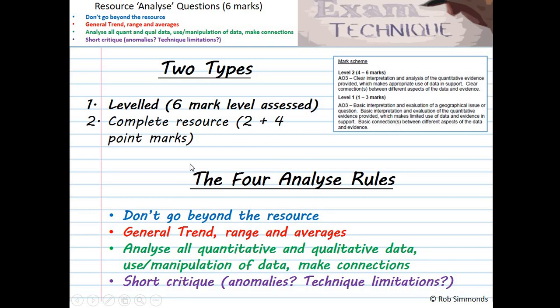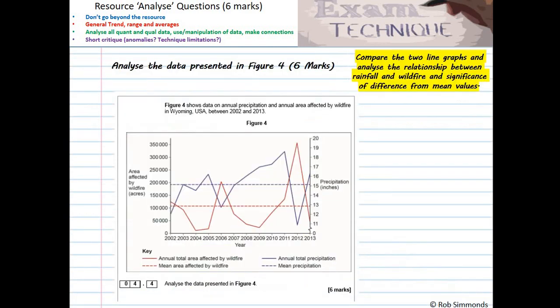So, the four rules for this type of question that will help you with your answer. Number one, don't go beyond the resource, and I'll show you some examiner's feedback to really confirm that to you. And then on to describing the general trend, if possible, including a range and use of averages. Make sure you analyze all quantitative and qualitative data. That might be comparisons of different graphs or pictures to graphs, something like that. If possible, manipulating data and certainly making connections between the two. And then if possible, some sort of critique. So that might be picking out anomalies or it might be possibly talking about limitations of the technique that's been used.